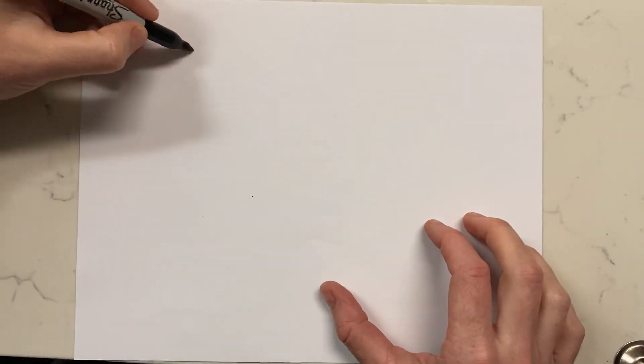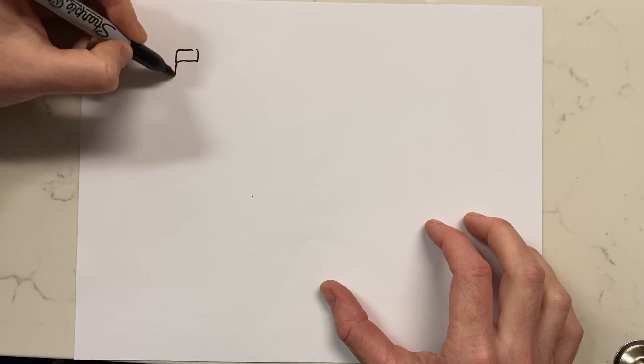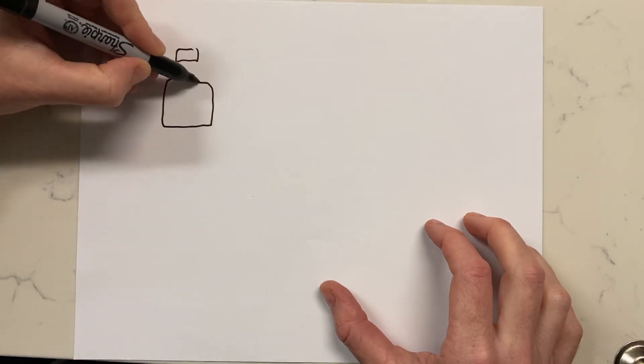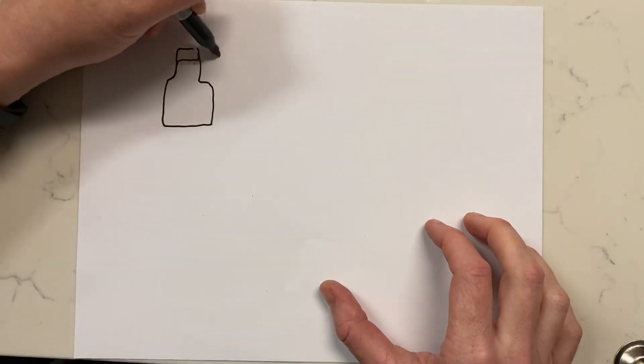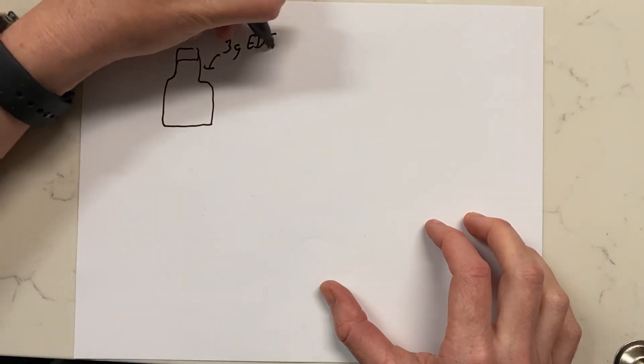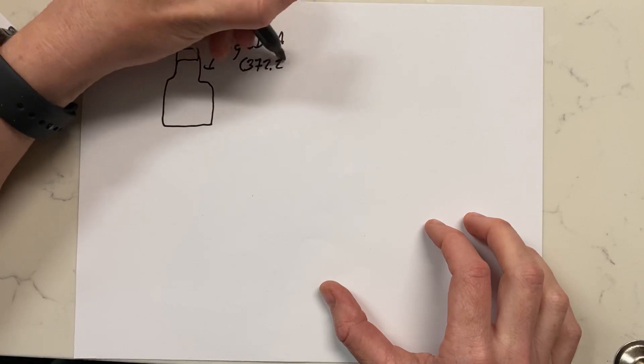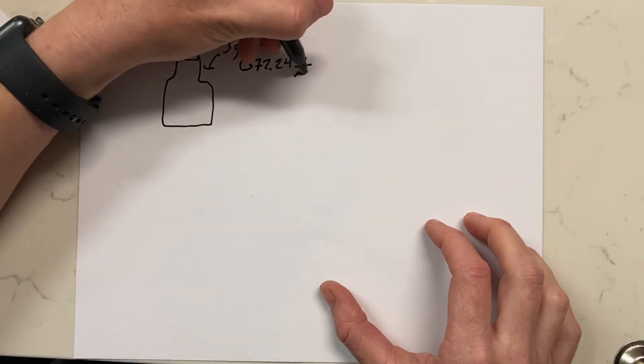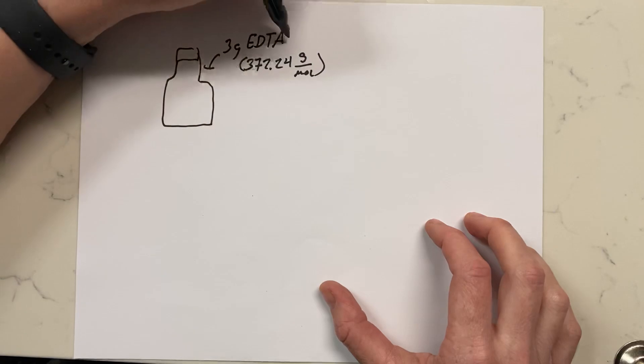Okay, so to reiterate, in a 500 milliliter bottle we added 3 grams of EDTA, which has a formula mass of about 372.24 grams per mole. If you're calculating it, make sure that you're paying attention to the fact that it's actually a dihydrate with two waters on it, so you may want to add that extra 36 grams per mole for water.